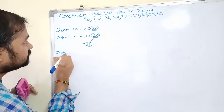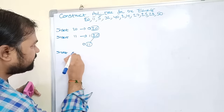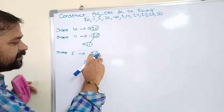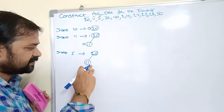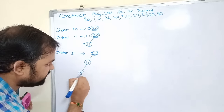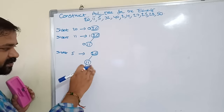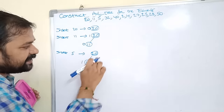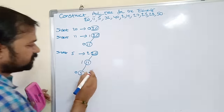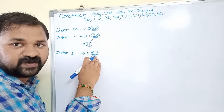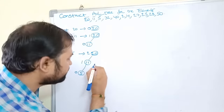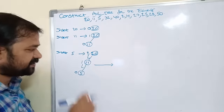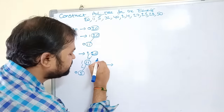Next let us insert 5. The root element is 20. Compare 5 with the root: 5 is less than 20, so go left. Next, 5 is less than 11, so go left again. Calculate balance factor from the leaf node onwards: for 5 it is 0; for 11 it is 1 minus 0 = 1; for 20 the left subtree height is 2 and right subtree height is 0, so 2 minus 0 = 2. So node 20 is unbalanced. We have to perform a rotation. This is left subtree left child, so we have to perform LL rotation.